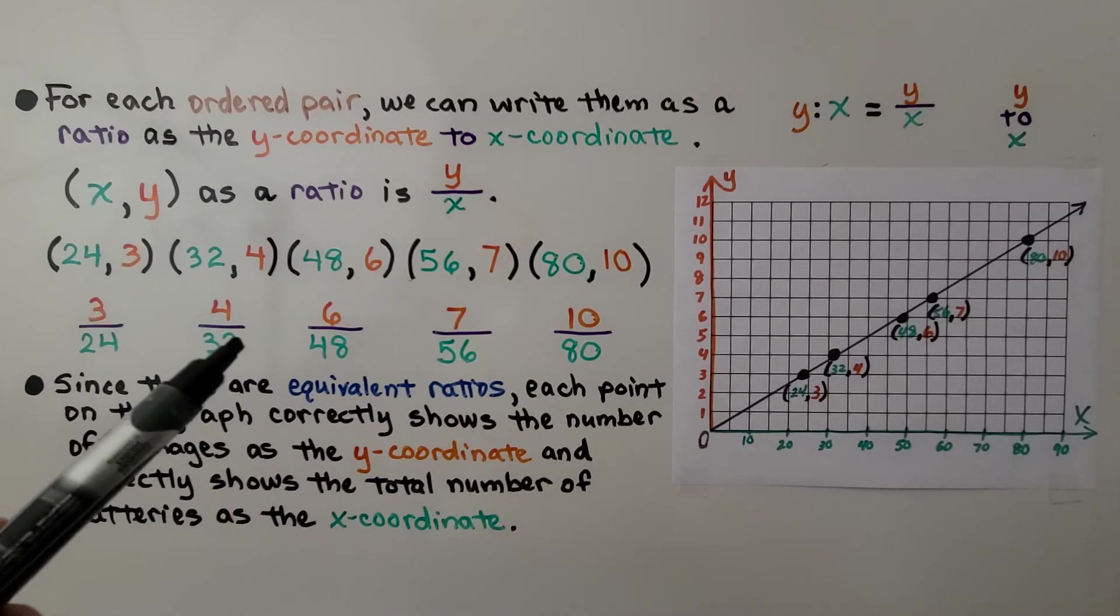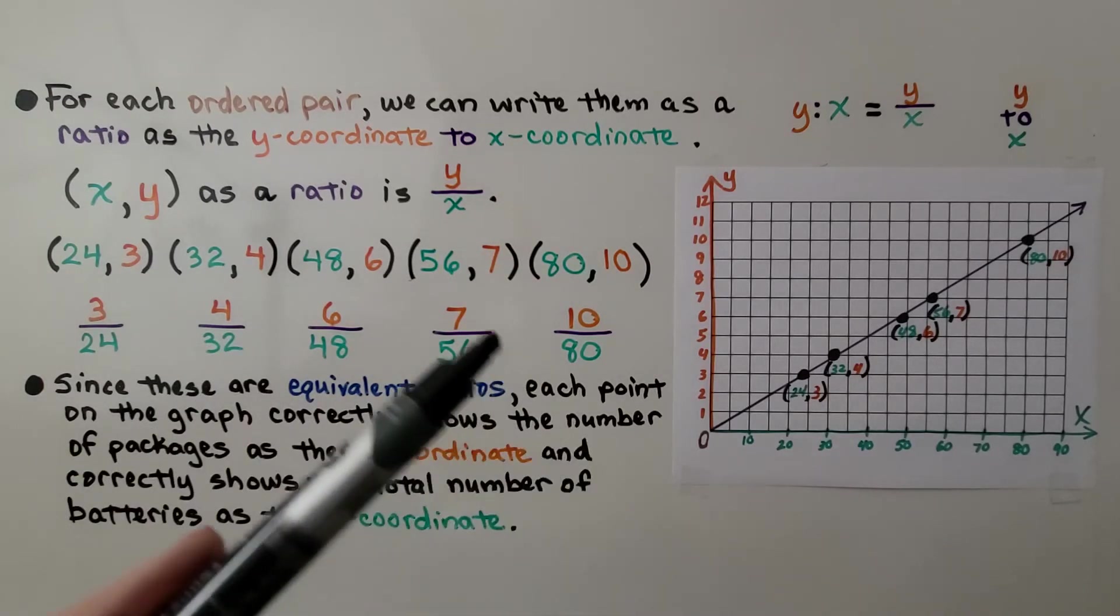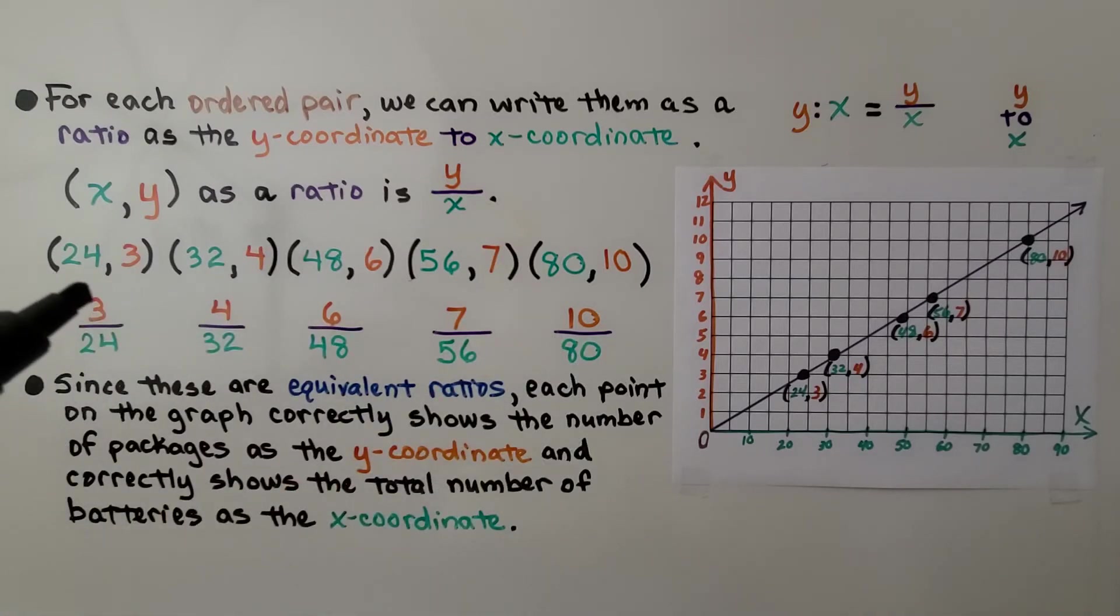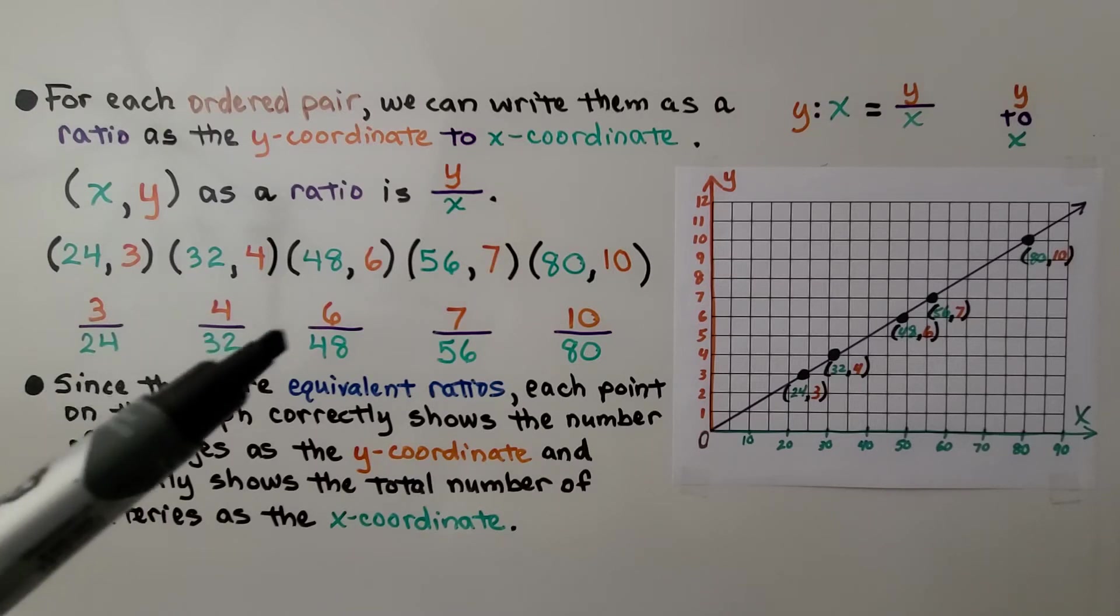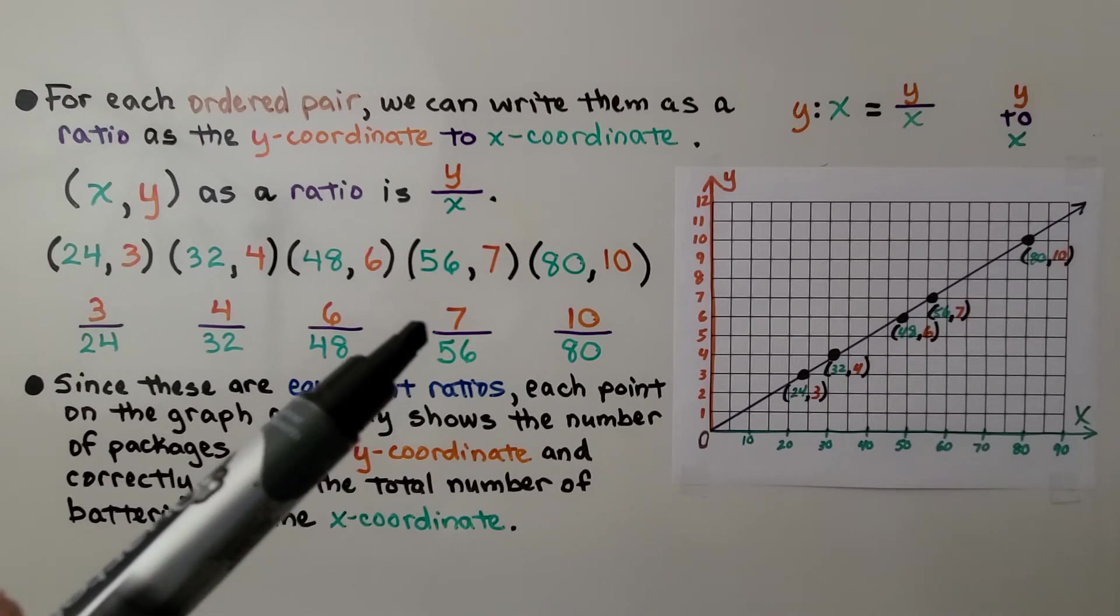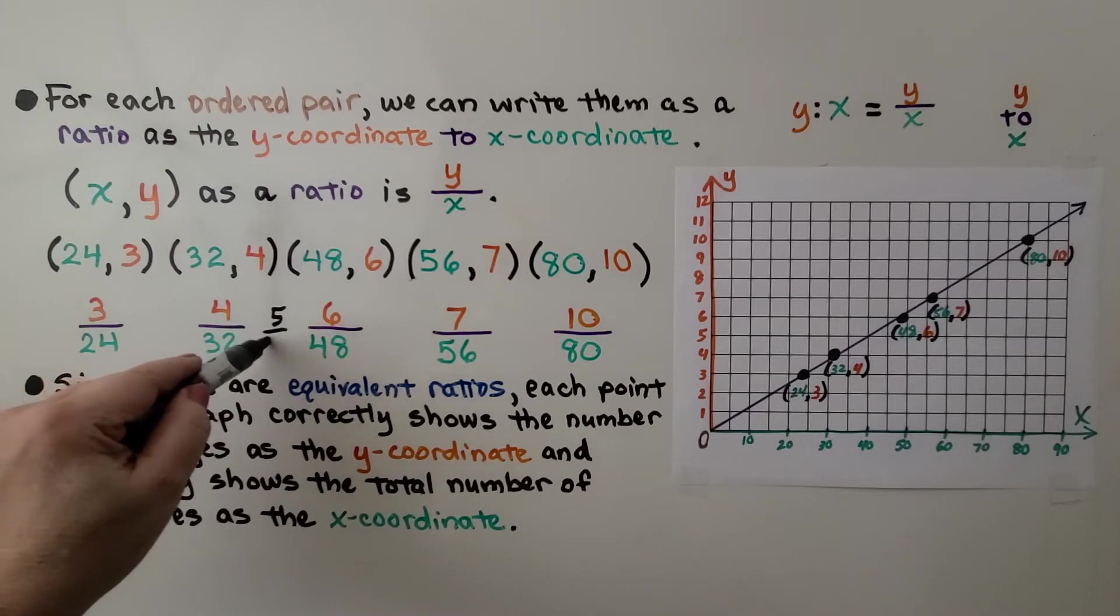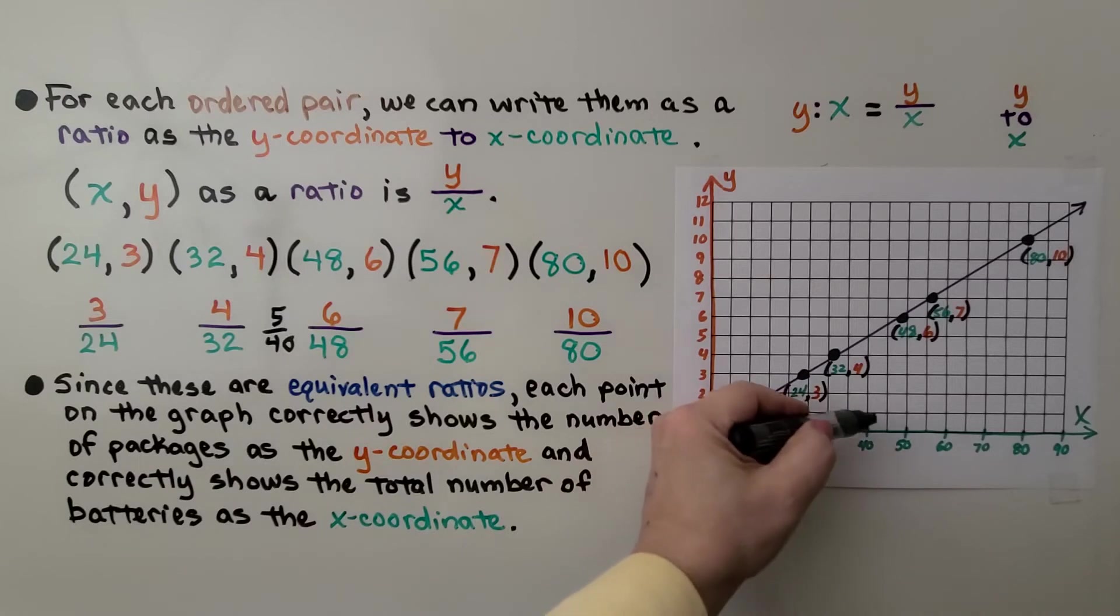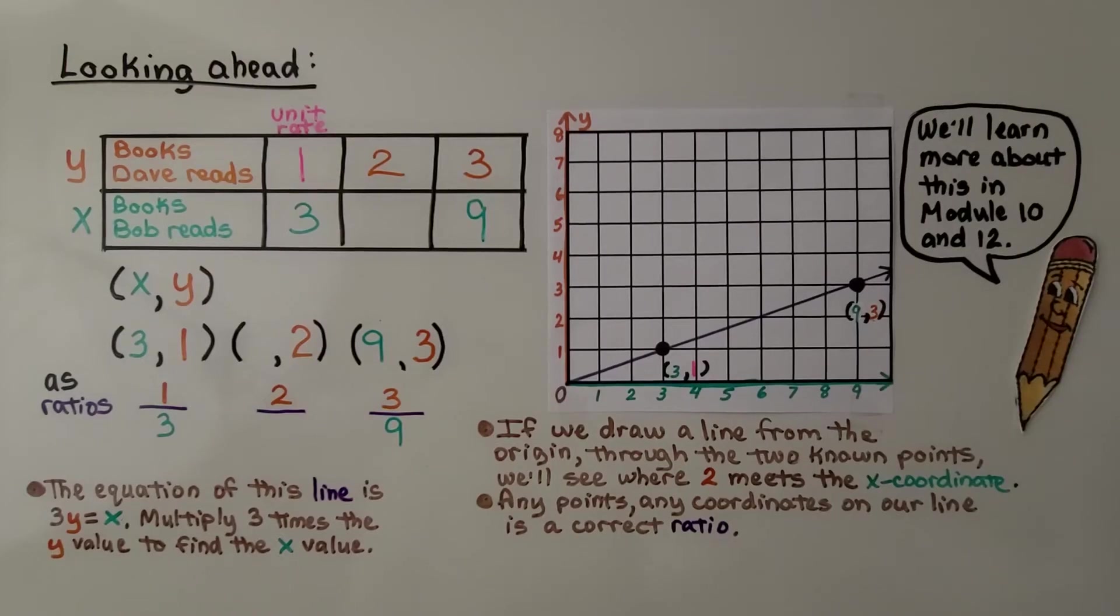We knew when we were doing this in the last video that our unit rate was 8 to 1. So we knew that we could just multiply the 4 times 8 and get 32, the 6 times 8 and get 48, the 7 times 8 and get 56. We found that in the last video. Which means if we have 5 here, 5 times 8 is 40, right? So that would be a correct ratio. And look, if we go to 40, look at where 40 hits, right at 5. Look at that.